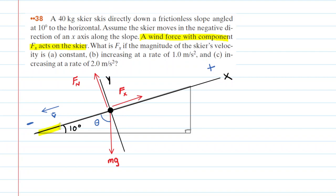If we look carefully, we have a right triangle and can label the right angle. The sum of angles in a right triangle is 180 degrees, so the 90-degree angle plus the 10-degree angle plus theta must equal 180 degrees. Solving for theta gives us theta equals 80 degrees, which we'll go ahead and label in the picture.